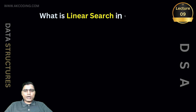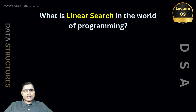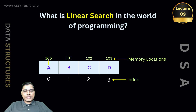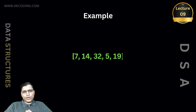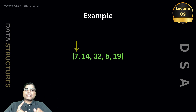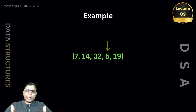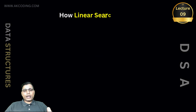So what is linear search in the world of programming? Linear search is an algorithm where you go through each element in the array one by one, checking if it matches the value you are searching for. Let's say we have an array like 7, 14, 32, 5, and 19, and we are looking for the number 5. In linear search we start from the first element, which is 7, and keep checking each element until we find value 5 or reach the end of the array.